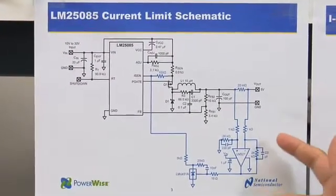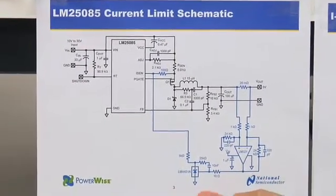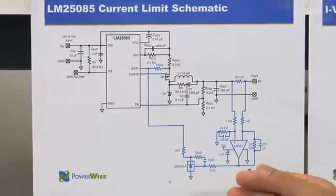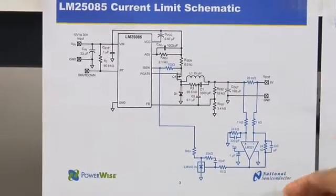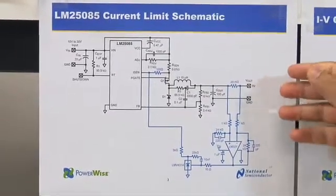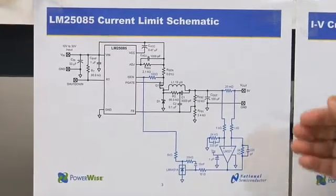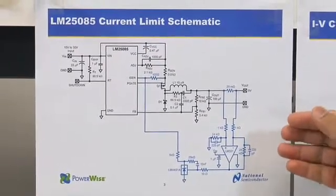The current limit circuit consists of a sense resistor, a difference amplifier, and a zener reference. This circuit has been programmed so that when the output load exceeds 2.5 amps, the circuit goes into current limit and remains there until the current drops below 2.5 amps.